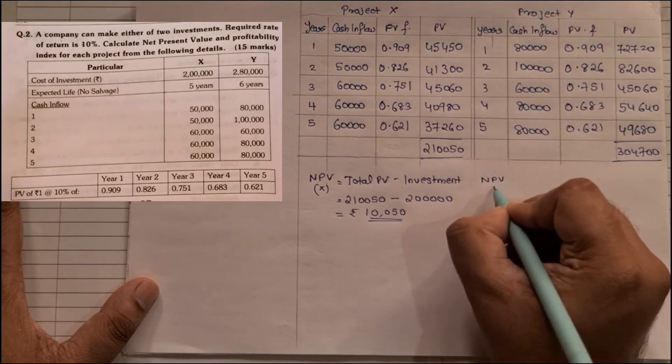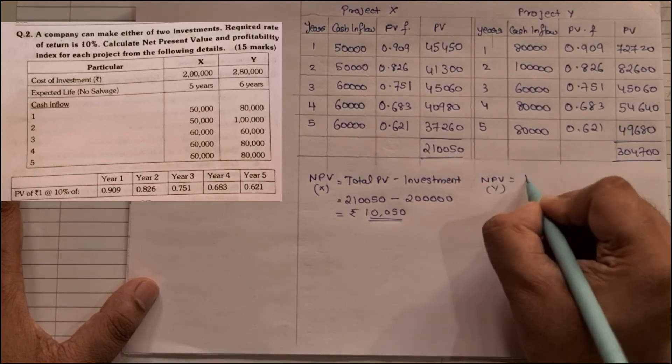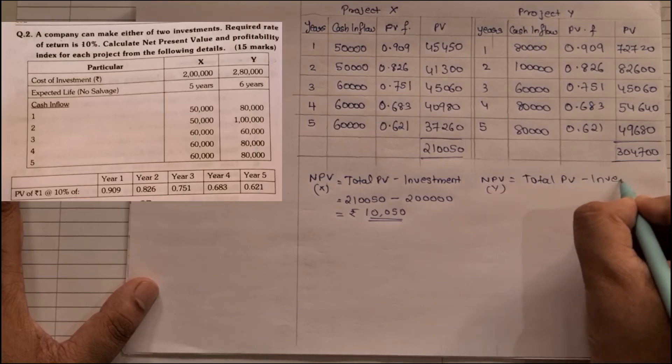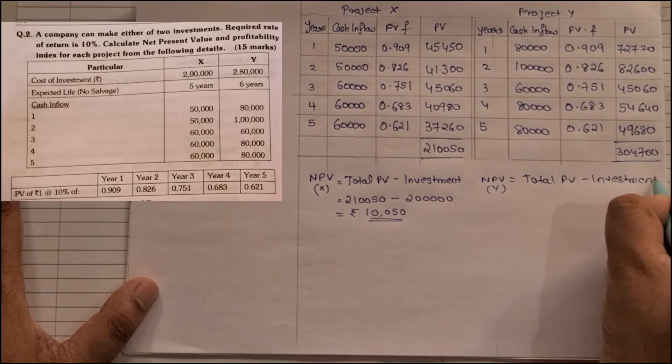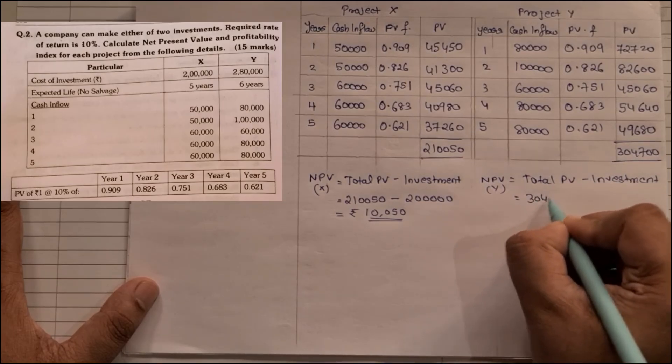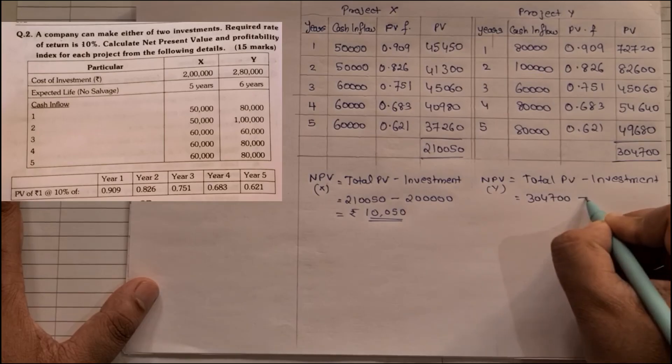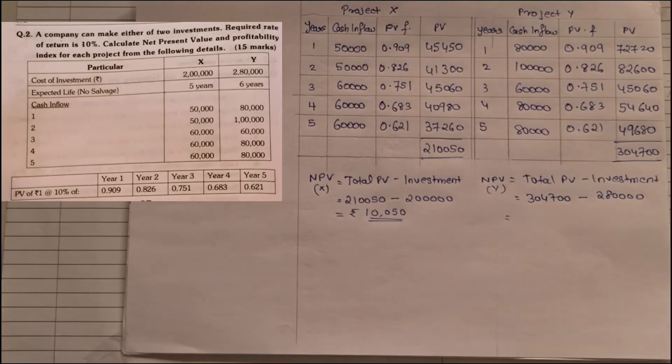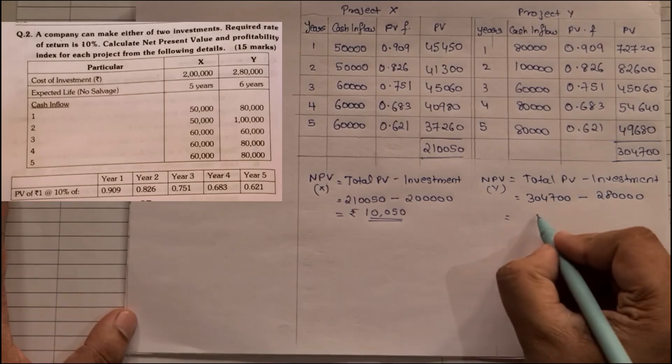Same way we have to find NPV of Y. Formula remains the same: total PV minus investment, which is 3,04,700 minus the initial investment of 2 lakhs 80,000 for the second one. So 3,04,700 minus 2 lakh 80,000 is 24,700.